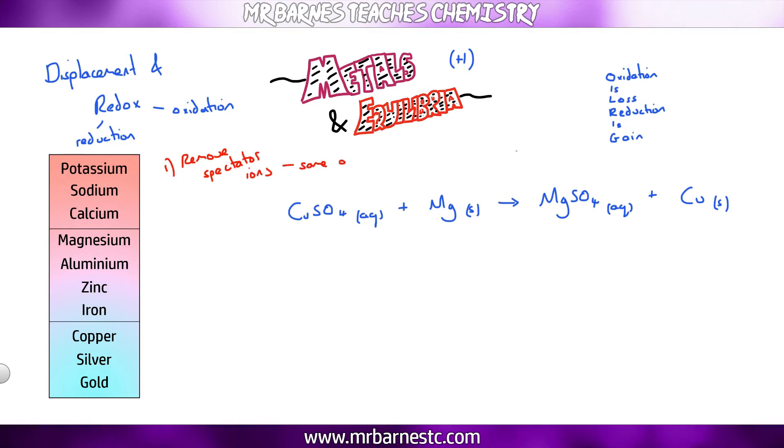The spectator ions being the ions that are exactly the same on both sides. So if we have a look at this, we've got copper and we've got sulfate. You should remember a sulfate is SO4 2- therefore copper has got to be Cu2+ because we've only got one of it.